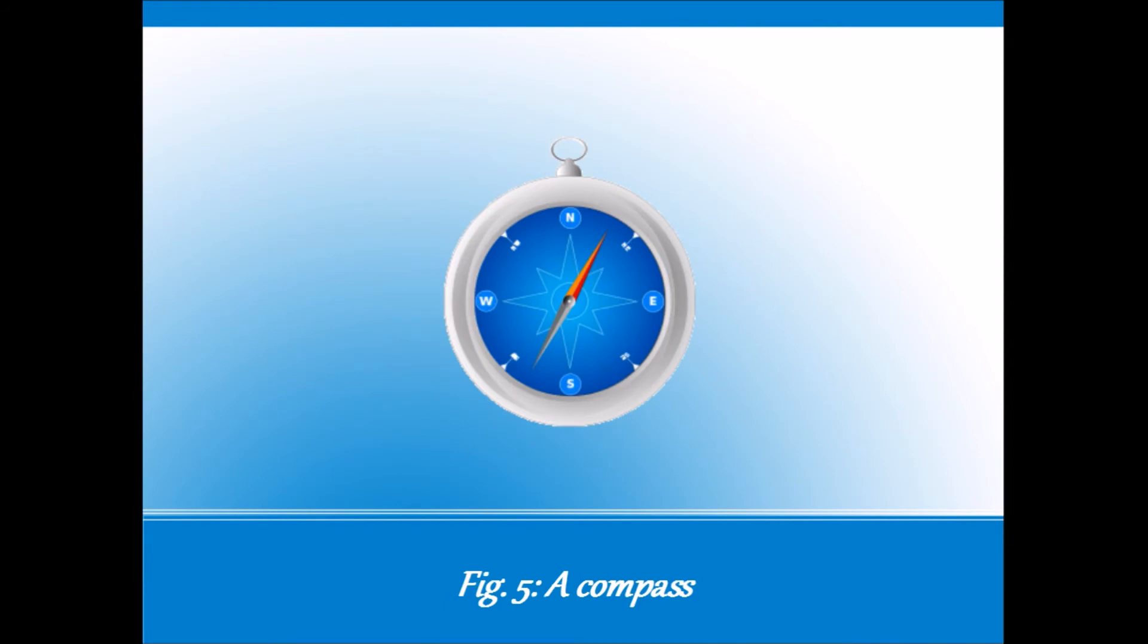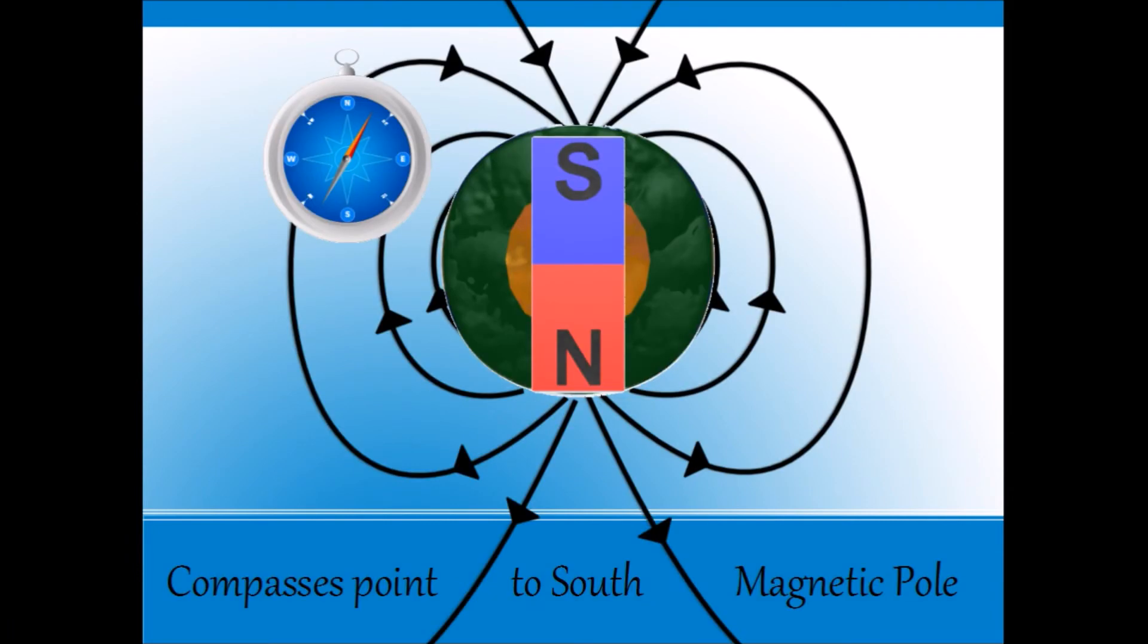But there's a big misconception when it comes to telling north from south. If you have a compass like this, it has a needle that reacts to the earth's field. The north pole of your compass is attracted to the south pole of the earth, that is, the south magnetic pole. This is a spot somewhere in the Arctic that people call the north geographic pole, because that's how it's marked on maps.